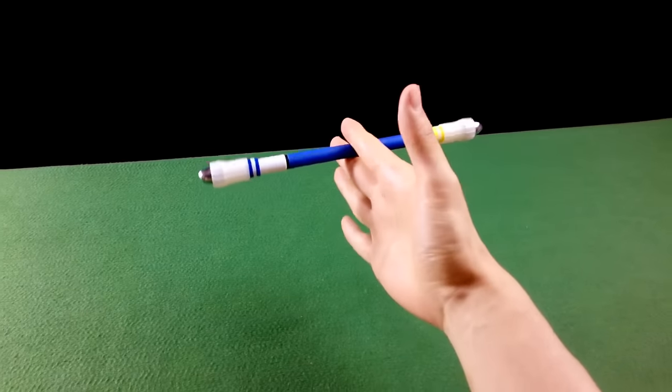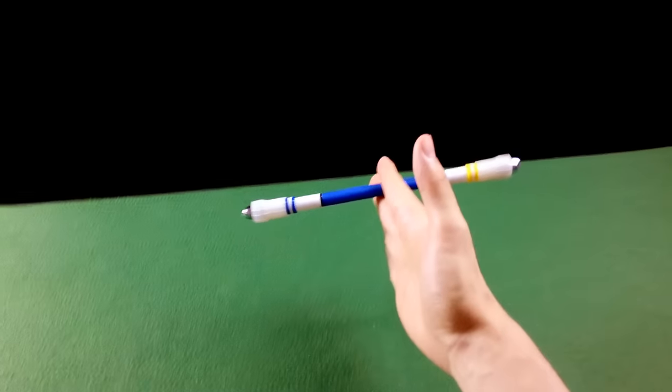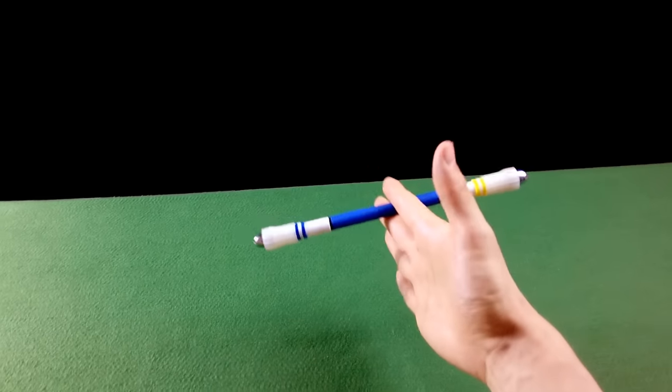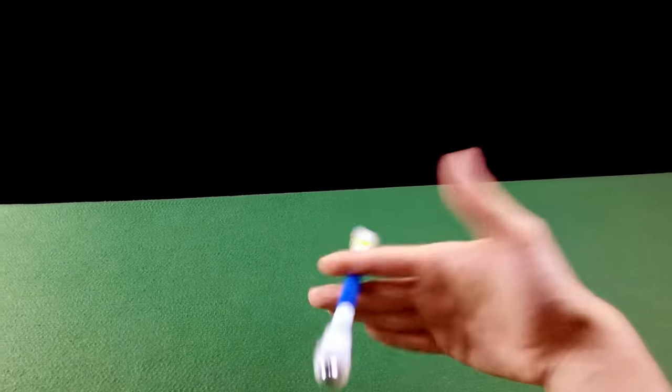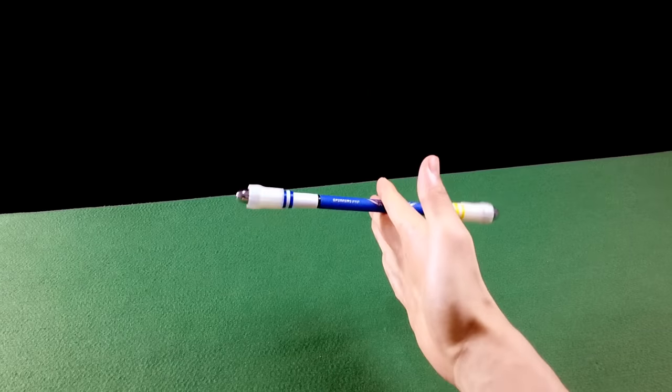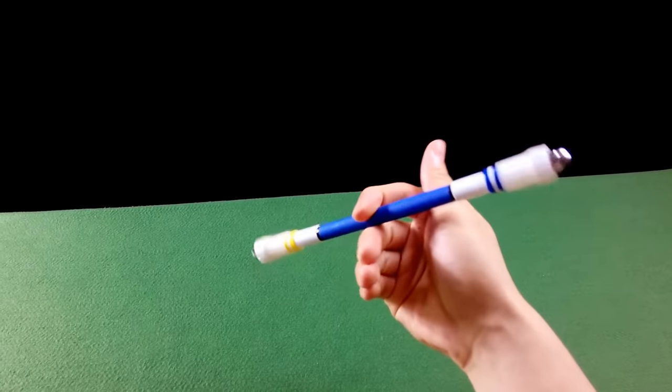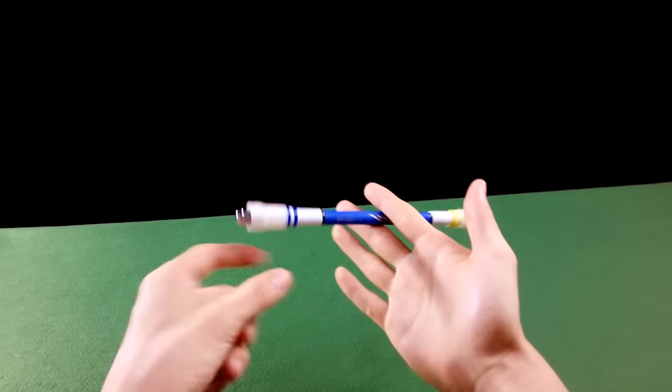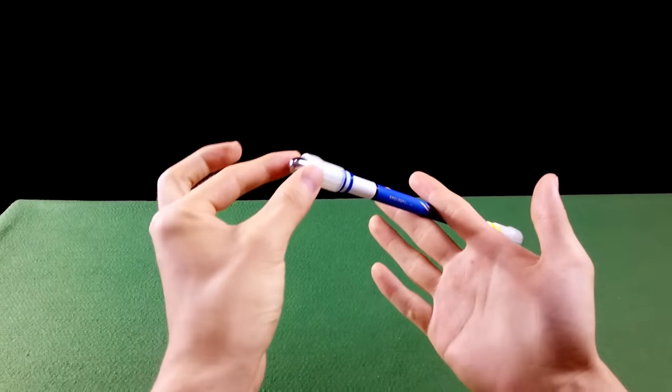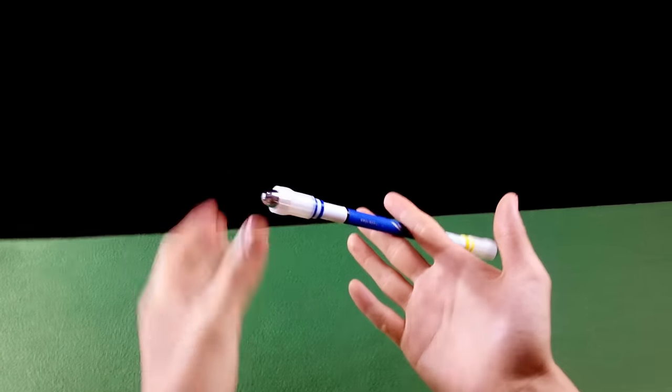Essa parte fica mais meio que intuitiva mesmo. Não tem uma forma, um jeito de explicar porque eu não sei quando eu começo a pegar o impulso para conseguir fazer várias e várias voltas. Então você vai fazer o seguinte: depois que você completar a volta, deixe o dedo frouxo e tente controlar a ponta. Eu meio que sinto o peso nessa ponta.